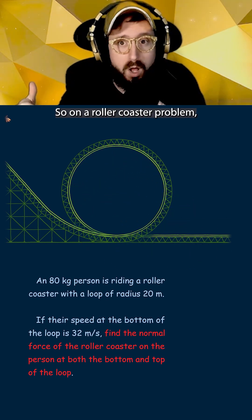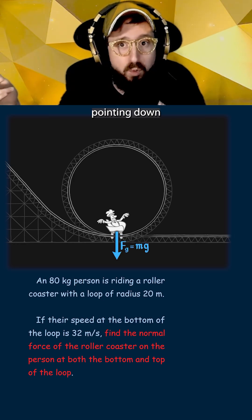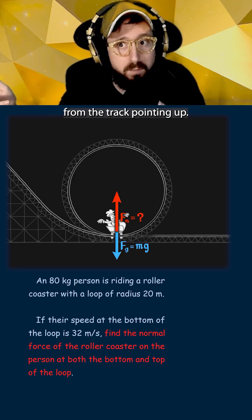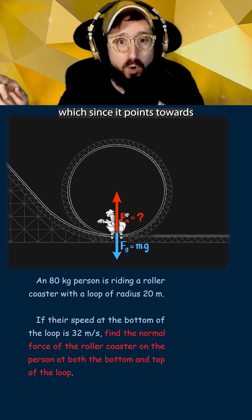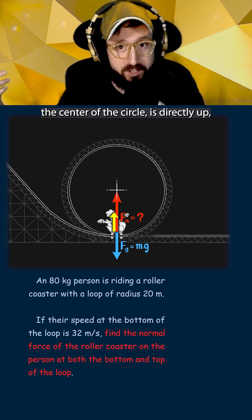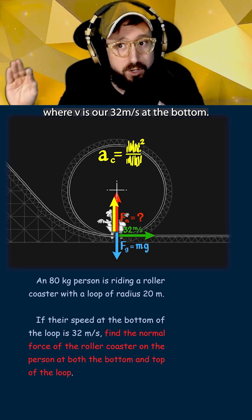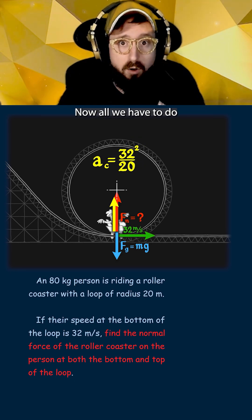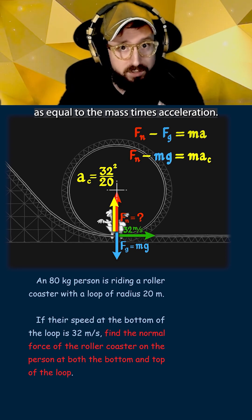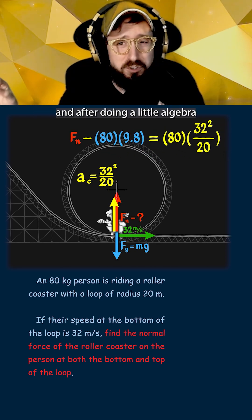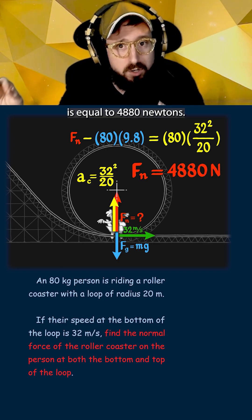In our roller coaster problem, we're going to start at the bottom by drawing a force diagram. Here we have the force of gravity pointing down and the normal force from the track pointing up. The next step is to draw the direction of the acceleration, which since it points towards the center of the circle, is directly up, with a value of V squared over R, where V is our 32 meters per second. Now all we have to do is write out the sum of the forces as equal to the mass times acceleration, plug in the numbers, and after doing a little algebra, we get the normal force is equal to 4880 newtons.